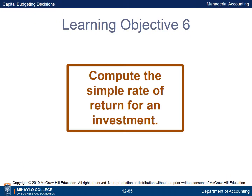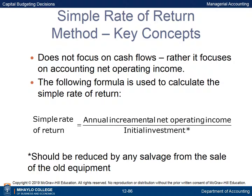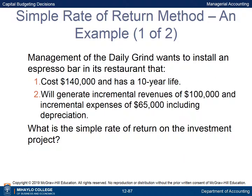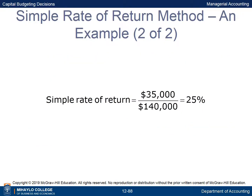Learning Objective 6 is to compute the simple rate of return for an investment. The simple rate of return method does not focus on cash flows; rather, it focuses on accounting net operating income. It is calculated as annual incremental net operating income divided by the initial investment, reduced by any salvage value from the sale of old equipment. The Daily Grind espresso bar costs $140,000 with a 10-year life and will generate incremental revenues of $100,000 and incremental expenses of $65,000 including depreciation. The simple rate of return is $35,000 divided by $140,000, or 25%.